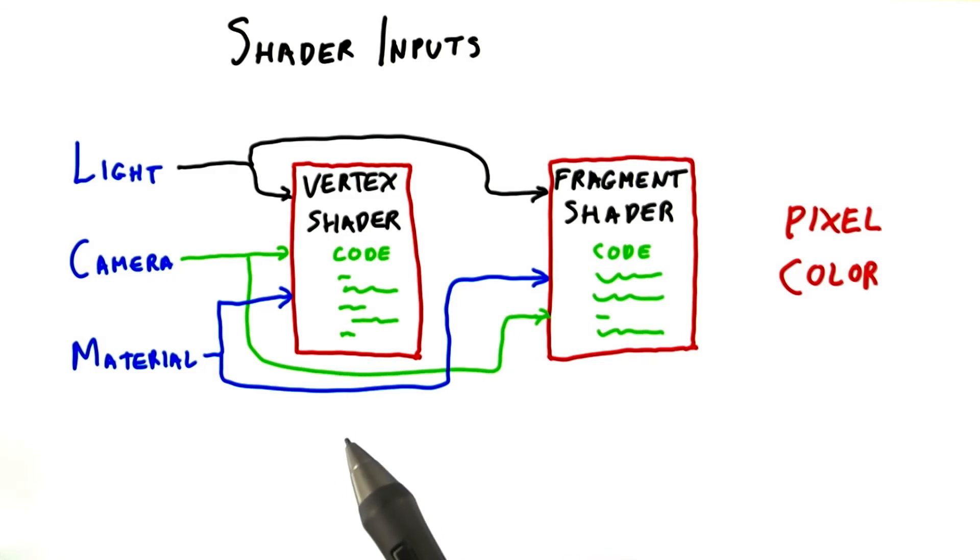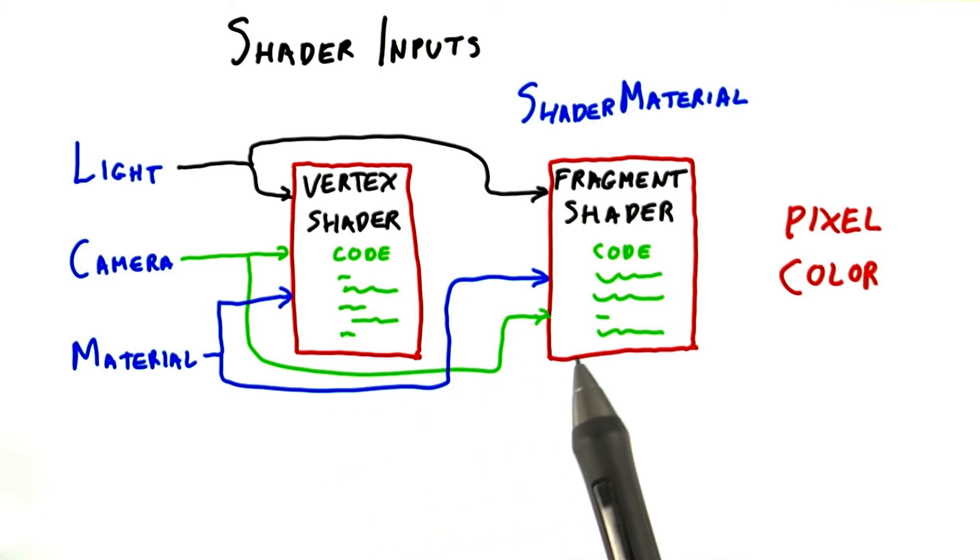Once vertex and fragment shaders became available, all this changed. You can now program whatever functions you want. When you select a material and lighting, what the Three.js library does under the hood is create efficient vertex and fragment shader programs for you.